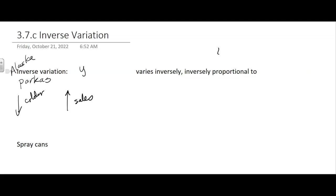So we write this model as y equals k, there's always a k, over x, where x is the temperature. So like in our example, oh shoot, not y, parkas I guess, sales.